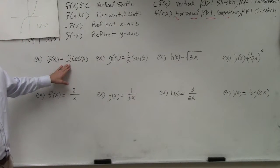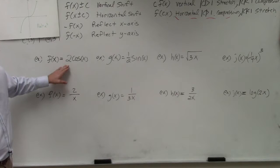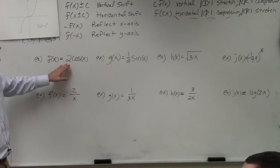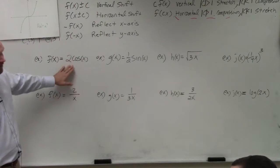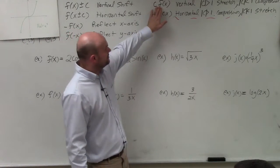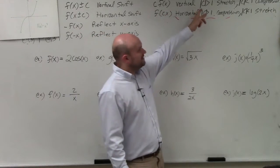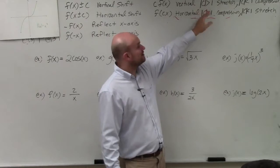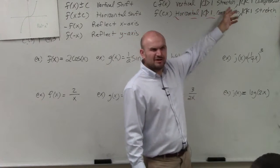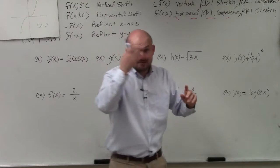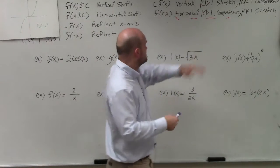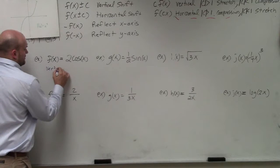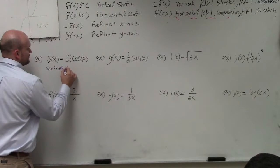We're multiplying outside. So we know we're multiplying outside. I look at my vertical compression or vertical stretch rule. I see C — that number, the absolute value. Since that's greater than 1, it's a vertical stretch. The absolute value of C is greater than 1, so therefore it's a vertical stretch.